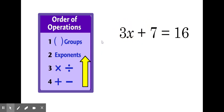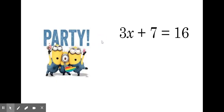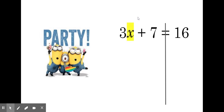So I would undo addition first, and then undo the multiplication second. But I like to do it a little bit differently — it involves having a party. I'm going to first draw my line down the equal sign. This is going to be like the doorway of the party. Anytime you see an equation, you are the variable. In this case, you are the X.